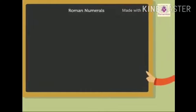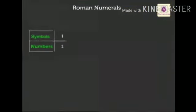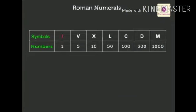Here are the letters used to write the numbers. The symbol I is equal to 1. V is equal to 5. X is equal to 10. L is equal to 50. C is equal to 100. D is equal to 500. And M is equal to 1000.